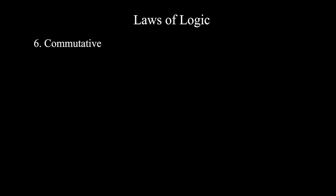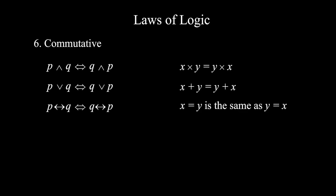Number six, commutative. p and q is equivalent to q and p. p or q is equivalent to q or p. p if and only if q is equivalent to q if and only if p. You can think of x times y equals y times x. x plus y equals y plus x. Note that implication is not commutative.